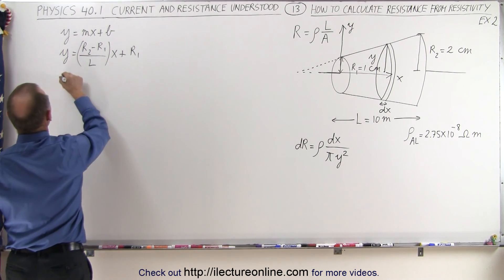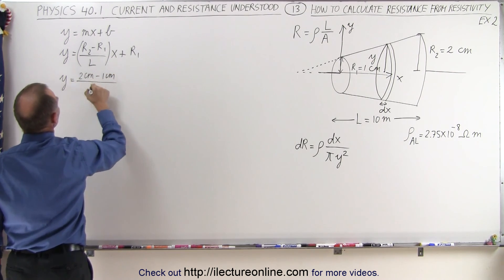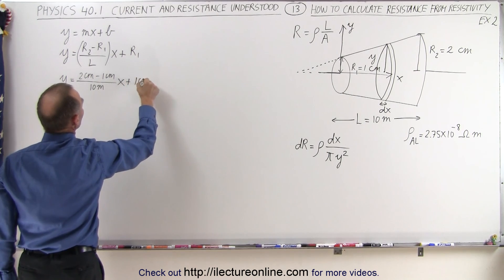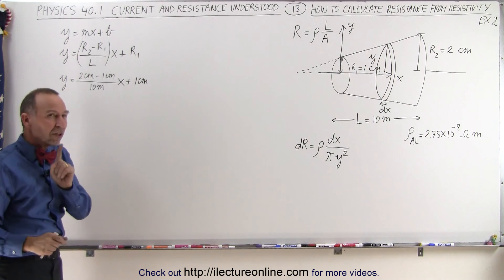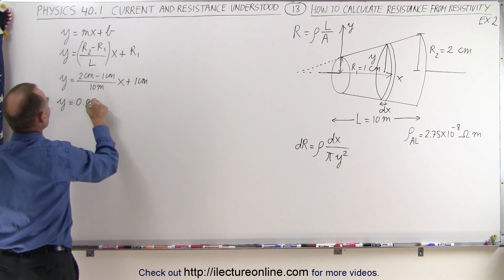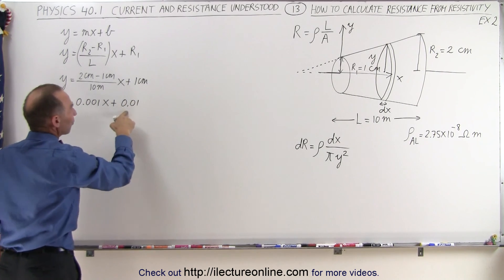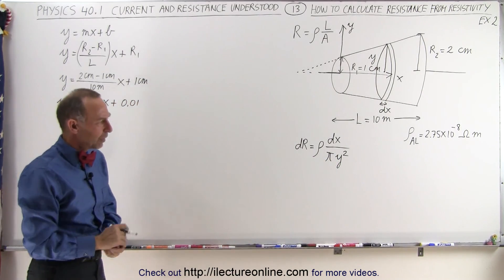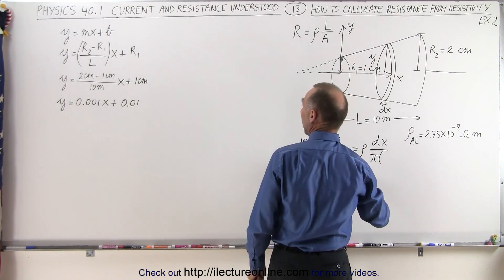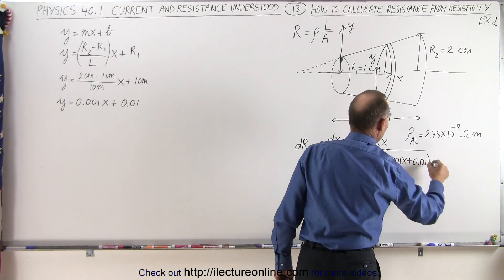So y equals r2 minus r1 — that's 2 centimeters minus 1 centimeter — divided by 10 meters, times x, plus 1 centimeter for the intercept. So we have 2 minus 1, that's 1 centimeter, which is 0.01 meters, divided by 10 meters. That gives us y equals 0.001 times x plus 0.01 meters. That's the value of y that goes into our equation, giving us the resistivity times dx divided by π times (0.001x + 0.01) squared.